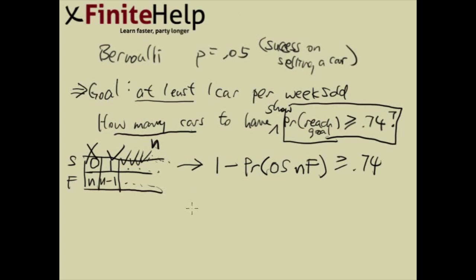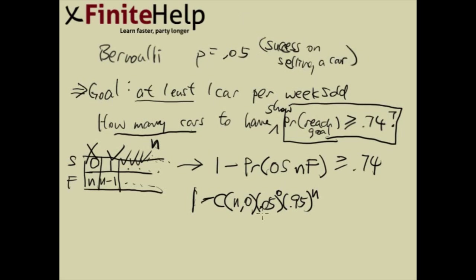So how do we go from there? We're going to break this down into the Bernoulli formula — I'll assume you're familiar with the basic form. We're looking at zero successes out of N trials, so we'll have N choose zero, then the probability of success on each trial, which is 0.05, raised to the zero power. The number of failures is N, and this gives us the probability of selling zero cars after showing N of them. We need 1 minus that to be greater than 0.74.